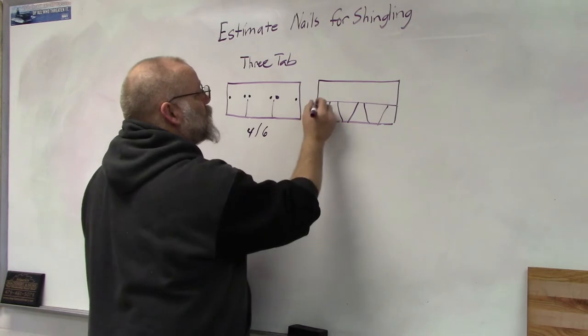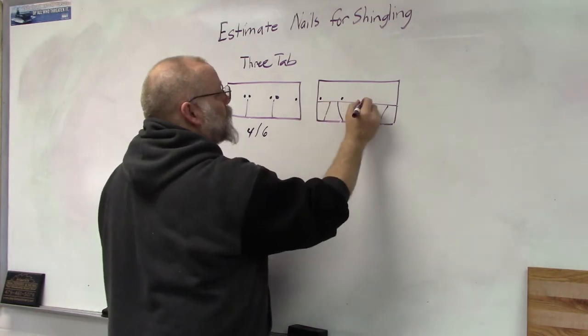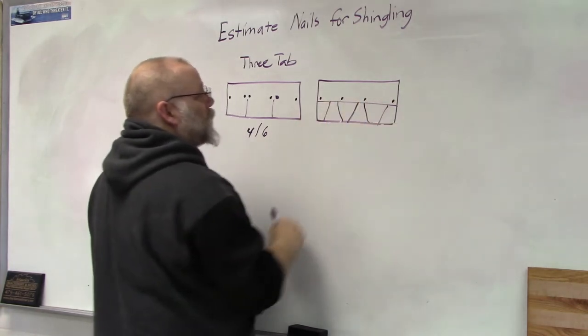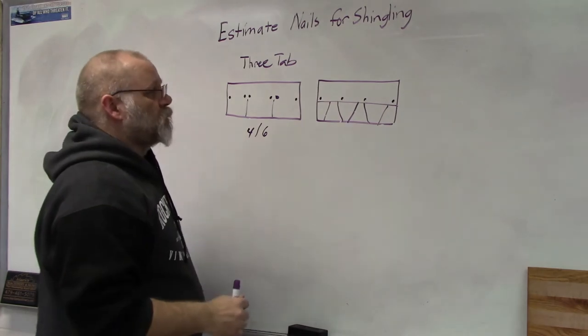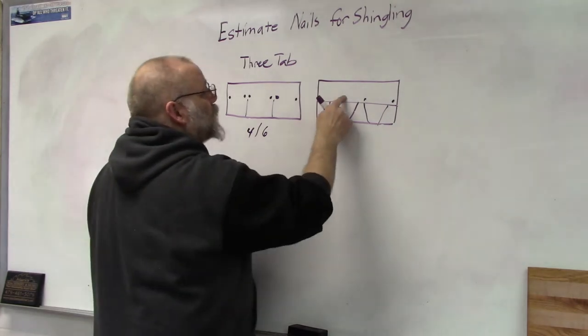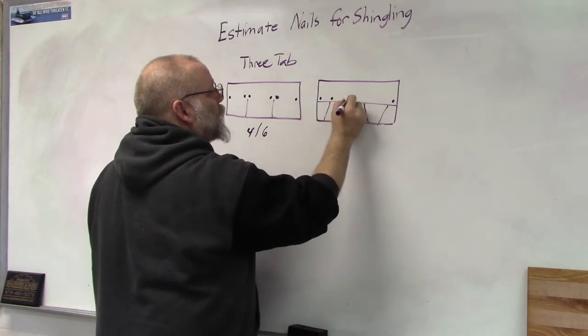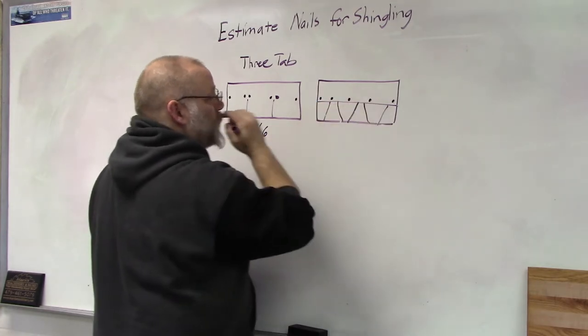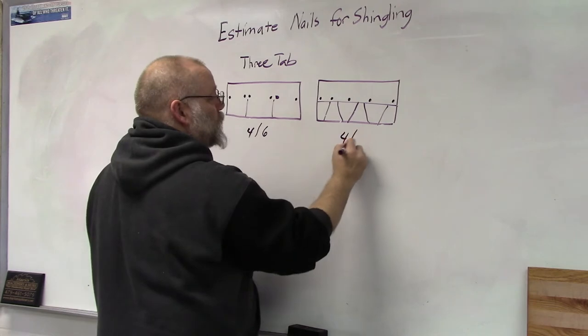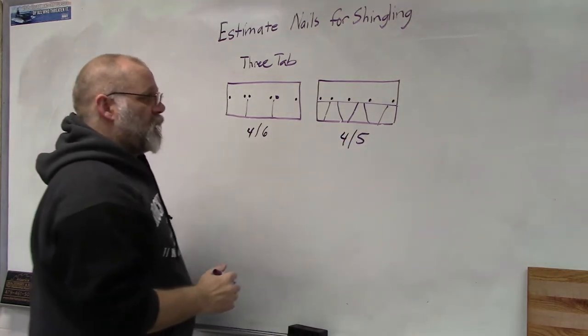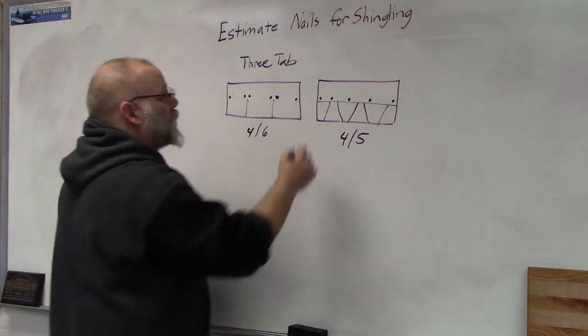Okay, over on the architectural shingle, again if you're not in a high wind area you can probably get away with four nails per shingle. If you're in a high wind area then you will probably add a fifth nail, so you're either going to be four or five nails on the architectural shingles.